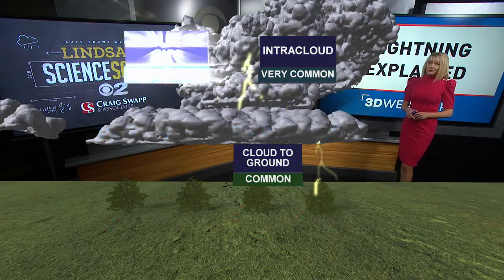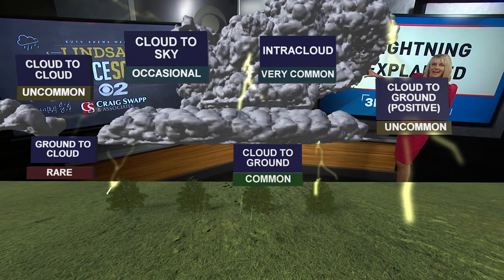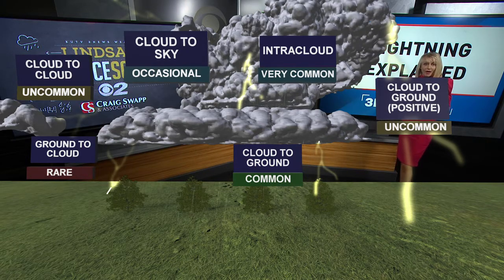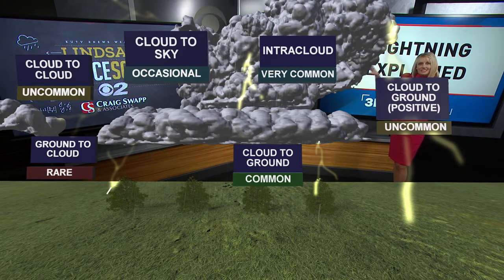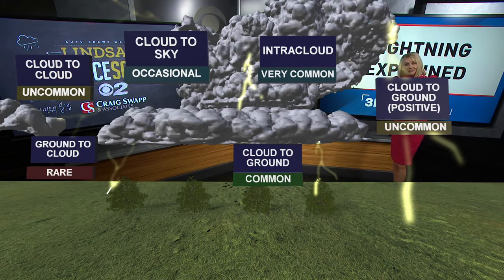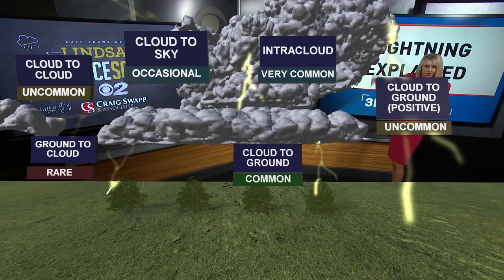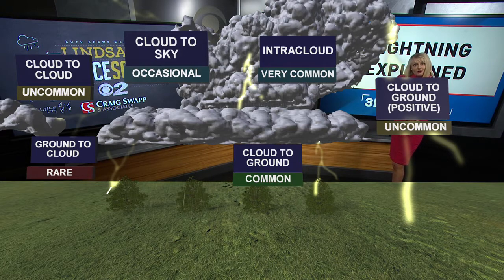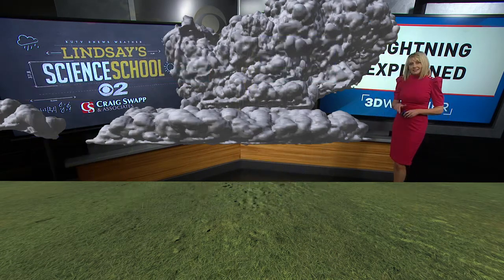There are lots of different kinds of lightning. Intracloud lightning happens inside the thunderstorm cloud and is most common. Cloud-to-ground lightning is also very common. Less common types include cloud-to-sky and cloud-to-cloud lightning. Positive lightning goes from the top of the cloud, where the positive charge is, down to the ground. Very rarely, you can get lightning going from the ground up toward the cloud, where the negative charge travels upward.